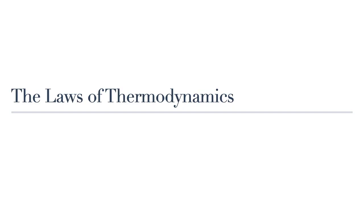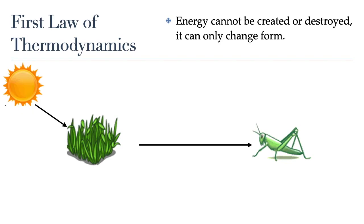There are two laws of thermodynamics we need to cover in this lesson, and the first law you're probably familiar with. It is the law of conservation of energy. In its most simple form, the first law of thermodynamics states that in a closed system, energy cannot be created or destroyed — it can only change form. To illustrate that, let's take a look at this food chain. All living things require a constant supply of energy. But since that energy cannot be created, it has to come from somewhere. And on Earth, the source of all energy is the sun.